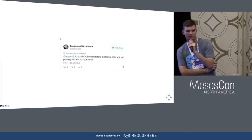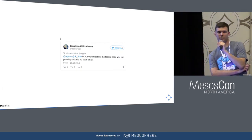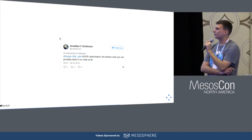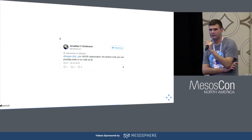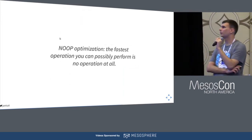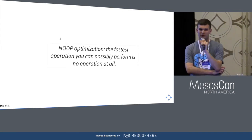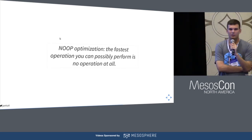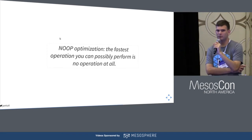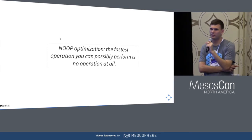The next optimization available in Marathon 0.13, 1.4, and 1.5 is NOP optimization. As one tweet puts it, the fastest operation you can possibly perform is no operation at all. This means you should delegate operations you want to perform somewhere else, so Marathon has time for its actual job — like deploying applications.